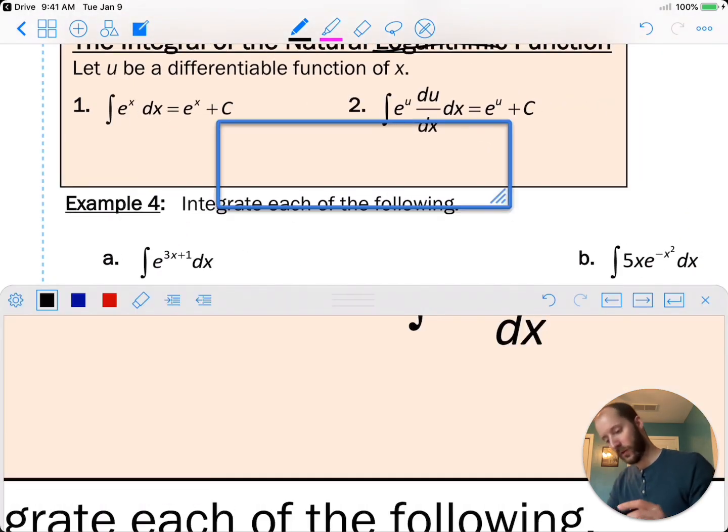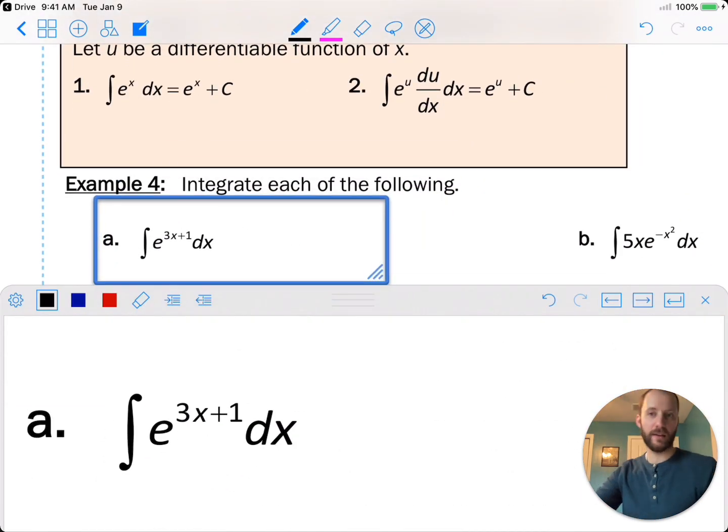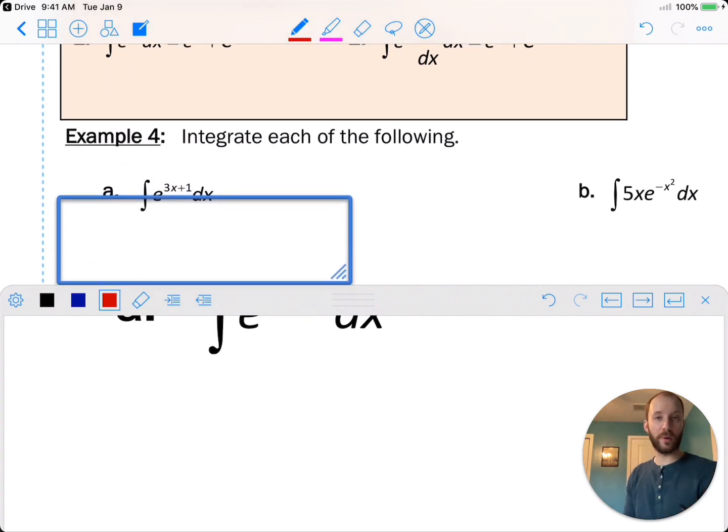So for example, example a, e to the 3x plus 1. Derivative of 3x plus 1 is 3. The coefficient on u is not 3, it's 1. But 1 is a number. Derivative of 3x plus 1 is a number. So the 1 is some form of the derivative of 3x plus 1.